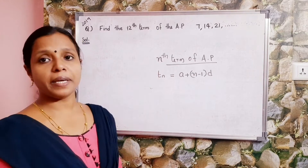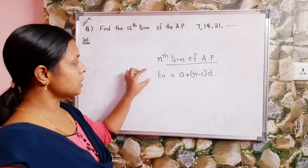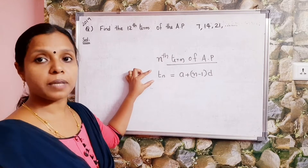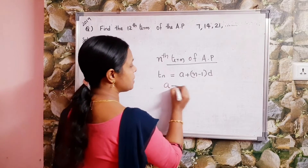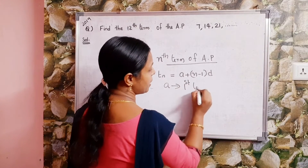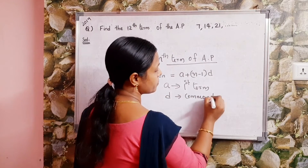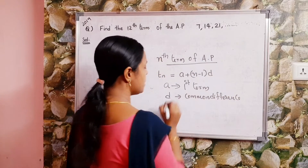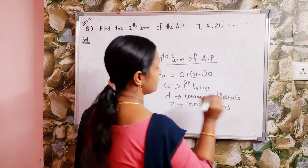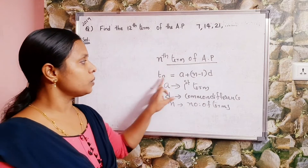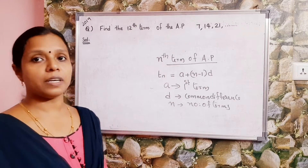The nth term of AP can be denoted as tn. The equation is: tn is equal to a plus n minus 1 into d. Here, a denotes the first term, d denotes the common difference, and n is the number of terms.